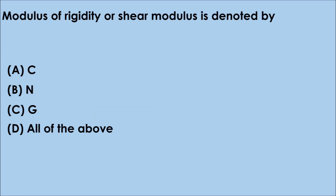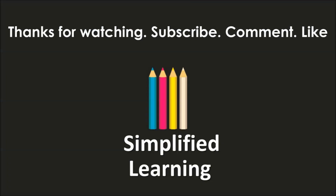Question No. 14: Modulus of rigidity or shear modulus is denoted by — Option A. C, Option B. N, Option C. G, Option D. All of the above. The correct answer is option D. All of the above. Modulus of rigidity or shear modulus can be denoted by any letter: C, N, or G. Thank you for watching. For more such videos on civil engineering subjects, please subscribe to Simplified Learning.